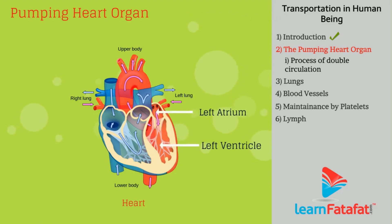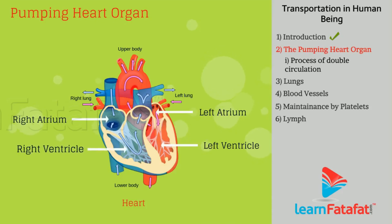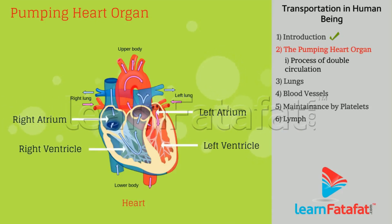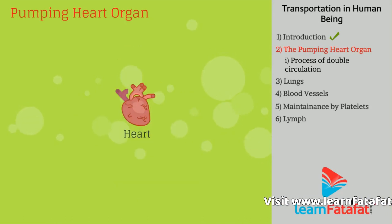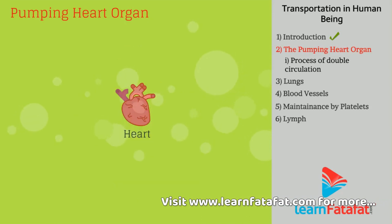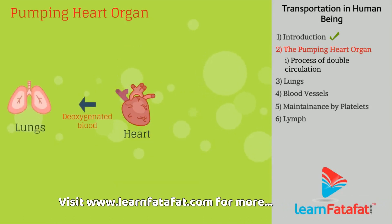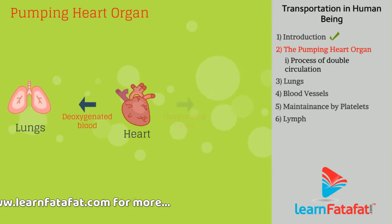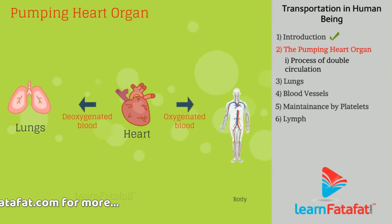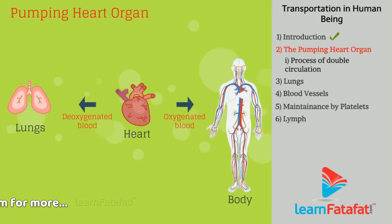The four chambers are: left atrium, left ventricle, right atrium, and right ventricle. The pumping action of the heart transfers deoxygenated blood to the lungs and oxygenated blood to the rest of the body.